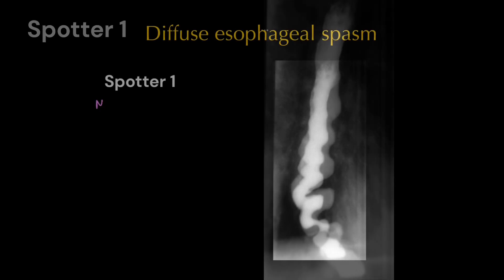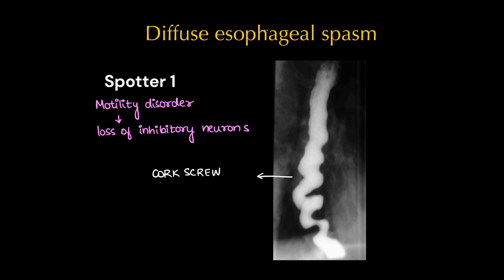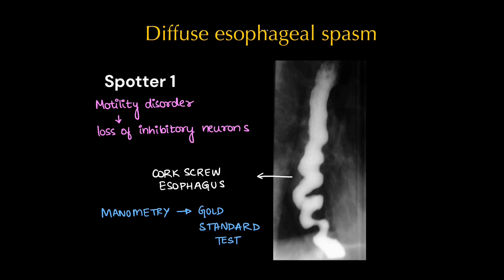This is a classic spotter of diffuse esophageal spasm. It is a motility disorder of the esophagus where there will be loss of inhibitory neurons, which will cause peristalsis that looks like a corkscrew appearance. The diagnostic gold standard test would be manometry.